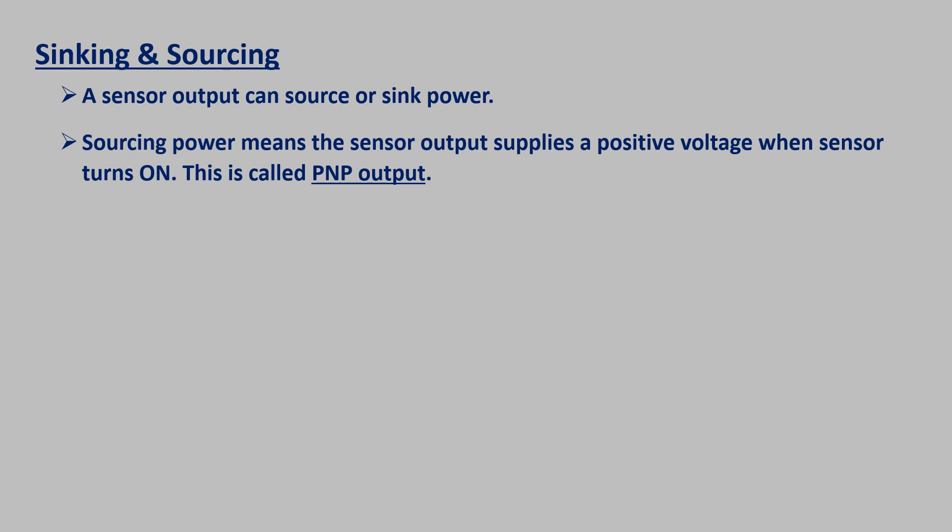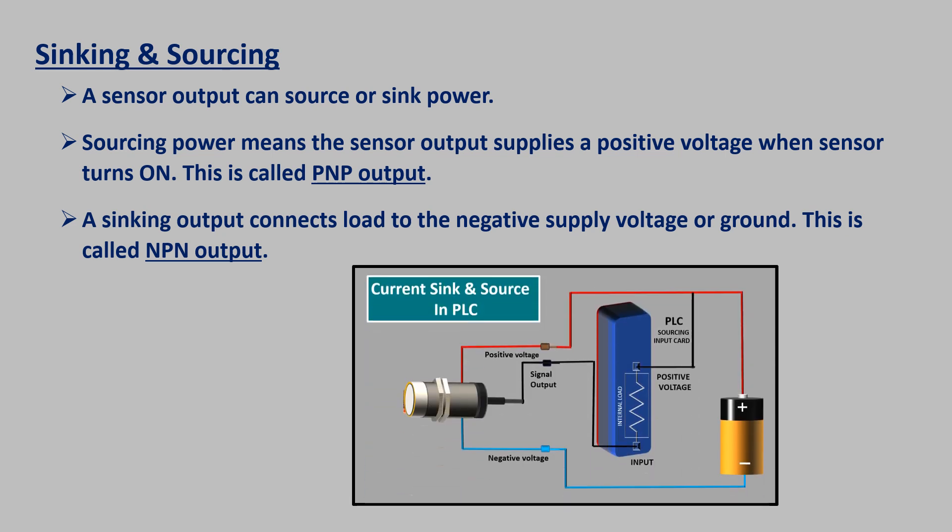Sinking and sourcing: A sensor output can source or sink power. Sourcing power means the sensor output supplies a positive voltage when the sensor turns on. This is called a PNP output. A sinking output connects the load to the negative supply voltage that is also ground in many systems. These connections are called NPN outputs. We have already discussed about sinking and sourcing concepts in a previous video. Link of that video is there in the description.